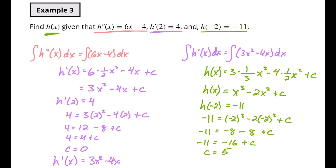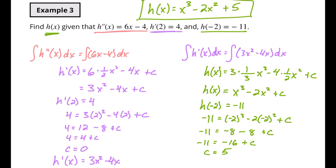Our final function h of x equals x cubed minus 2x squared plus 5. And that is the original equation for h of x. So that's boundary conditions: you integrate a function, you substitute a point in, you find the value of C, and maybe you do it a second time. I hope that was helpful. I'll see you in the next video.